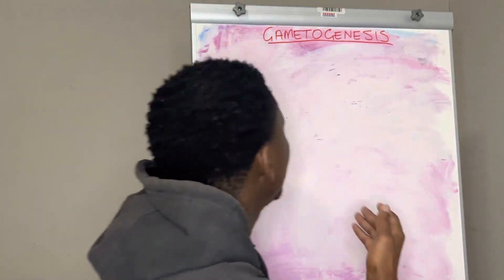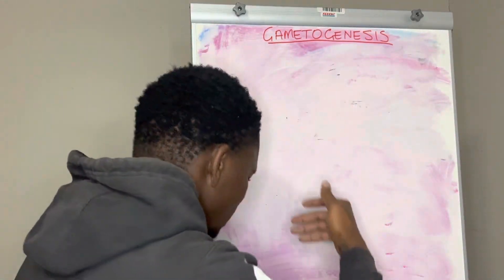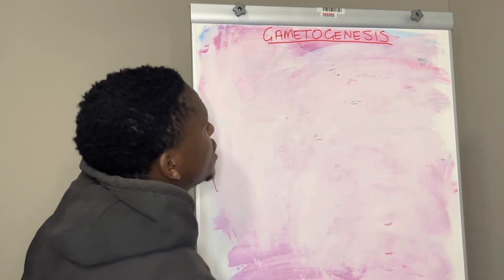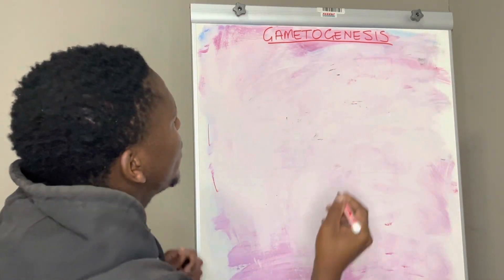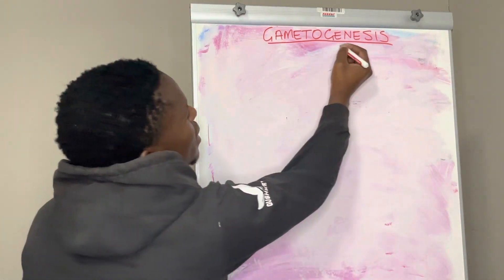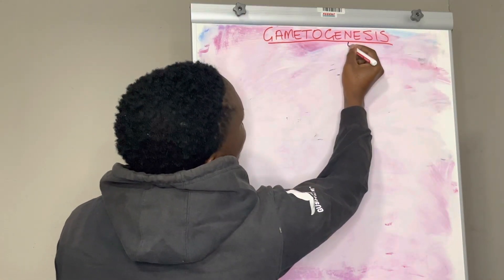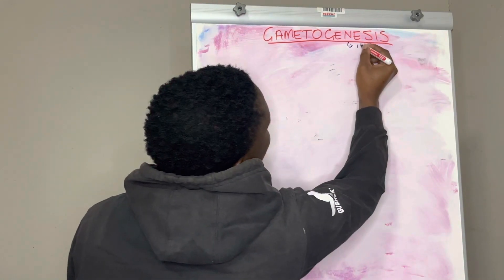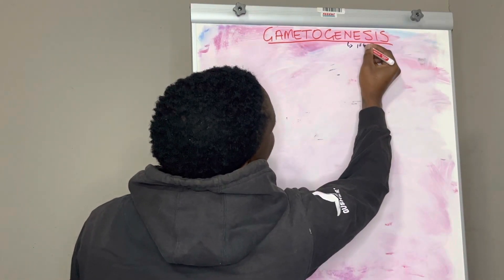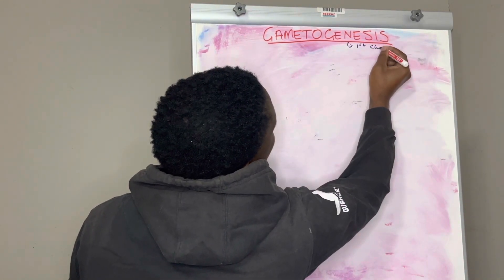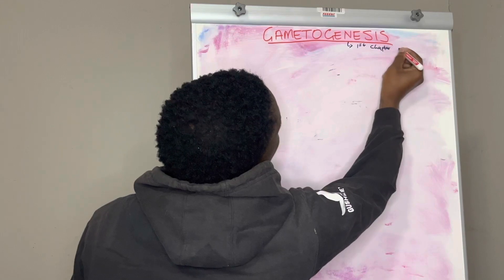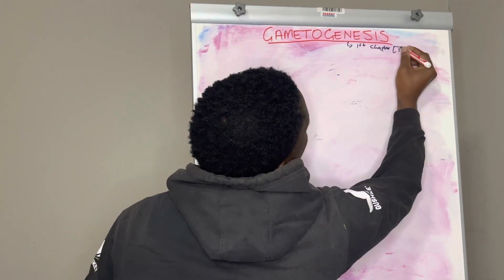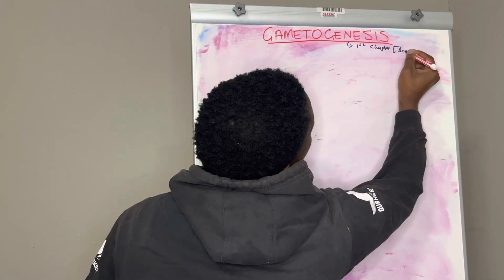There is a process which is responsible for forming those secondary sexual characteristics, and it is well known as gametogenesis. The word 'genesis' is familiar from the Bible — it is the first chapter in the Bible which talks about the beginning of the world.